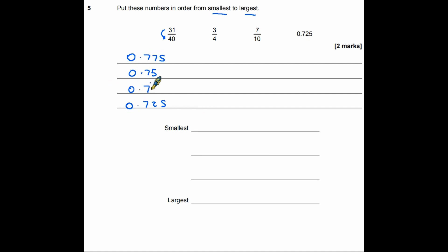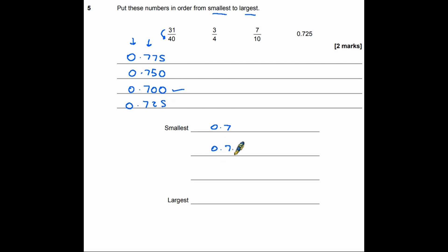They all start with 0.7, so let's look at the third decimal place. It helps to add trailing zeros so they all have the same number of decimal places: 0.775, 0.750, 0.700, 0.725. Comparing 700, 725, 750, 775 — the order from smallest to largest is 0.7, 0.725, 0.75, and 0.775.